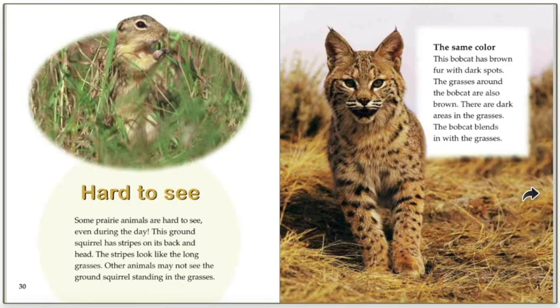Hard to see. Some prairie animals are hard to see, even during the day. This ground squirrel has stripes on its back and head that look like long grasses, so other animals may not see it standing in the grass. This bobcat has brown fur with dark spots, and the grasses around the bobcat are also brown with dark spots, so the bobcat blends in with the grasses.